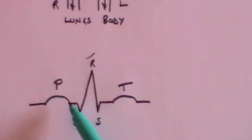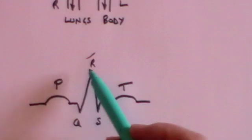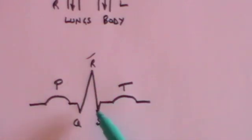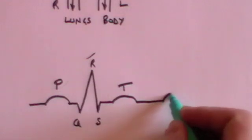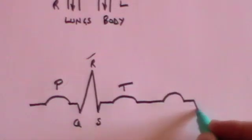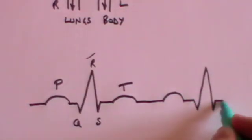An atrium push into the ventricle, the ventricle push to the lungs or body, and then the ventricle relaxes. Then the whole thing starts again with the P and then the QRS and then the T.